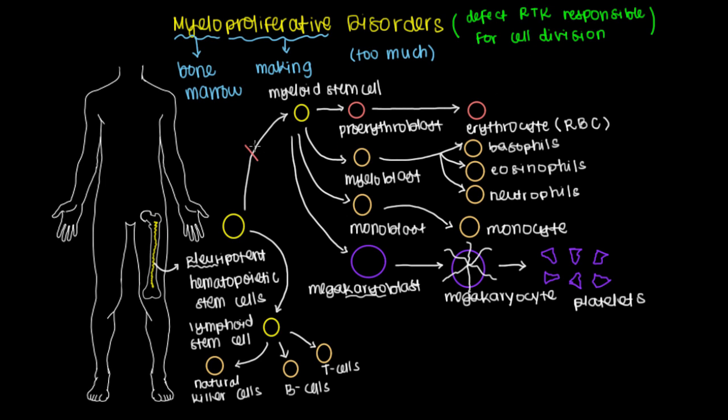If we have the mutation occurring along this path right here, that defect is associated with a myeloproliferative disorder known as polycythemia vera, where you have poly meaning a lot of different cells that are produced. You'll get a bunch of erythrocytes, basophils, neutrophils, all of these guys in the bloodstream.